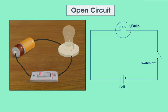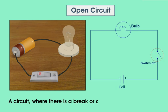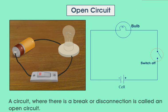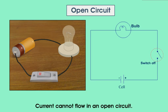When the switch is off, the bulb does not glow, because there is a break or disconnection in the circuit. Such a circuit where there is a break or disconnection is called an open circuit. Students, current cannot flow through such a circuit.